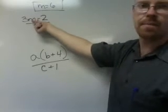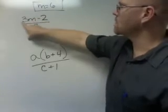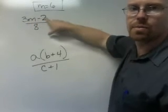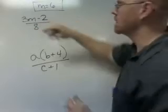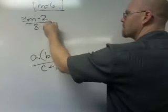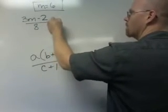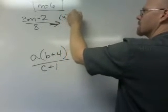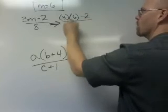And this means three times the variable m minus 2 and then divide that by 8. So this becomes 3 times 6 minus 2 over 8, and over 8 means we're going to divide by 8.